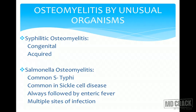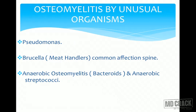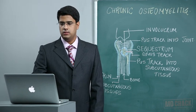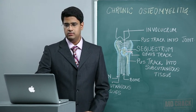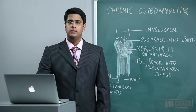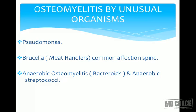Syphilitic osteomyelitis can be congenital or acquired. Salmonella osteomyelitis is common due to S. typhi, commonly seen in sickle cell disease, following enteric fever, with multiple sites of infection including the spine and lower limb. Pseudomonas osteomyelitis is characterized by green-colored discharge — Pseudomonas and green go hand in hand. Brucella commonly affects the spine and is associated with meat handlers — this can appear as an MCQ.